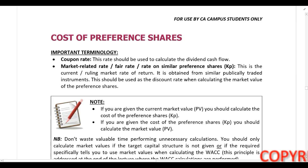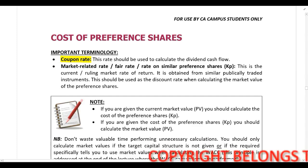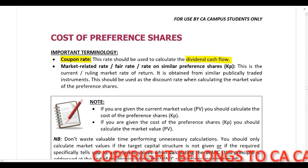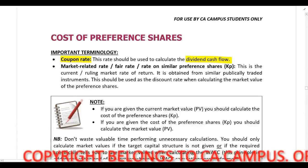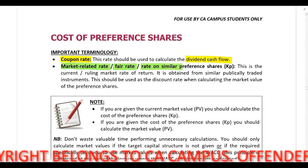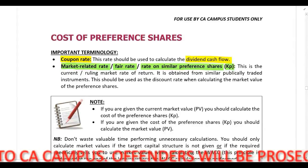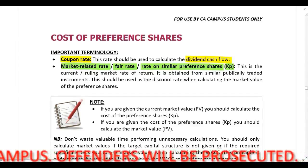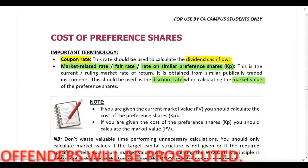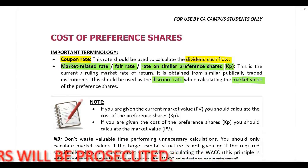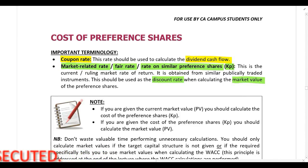We need to look at the cost of preferences. Some important terminology before we get to the calculations: if you are given a coupon rate, it is always used to calculate your dividend cash flow. It's very important that you distinguish the coupon rate from the market-related rate, the fee rate, or the rate on similar preferences. If you are given a market-related rate, a fee rate, or rate on similar preferences, that is the cost of the preference share, and the cost of the preference share is what we use as our discount rate when calculating the market value.